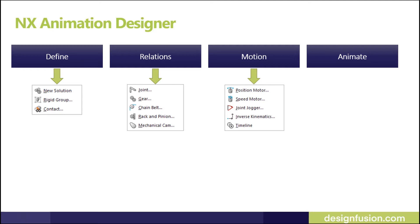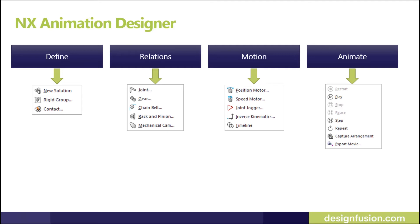The fourth basic step is Animate. Here you have options to play, stop, and pause your animation. You can also export movies and capture images. You can also generate a report out of the animation, like monitoring distance changes, angle changes, and other parameters. You can export a graph from the reports and also check interfaces. We will see these four steps practically one by one.